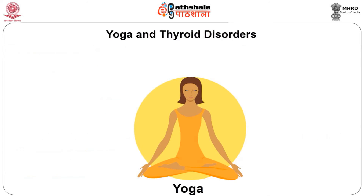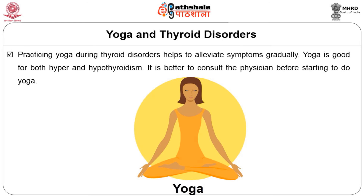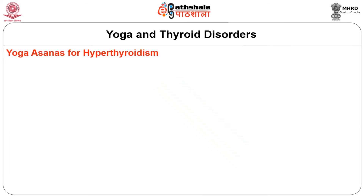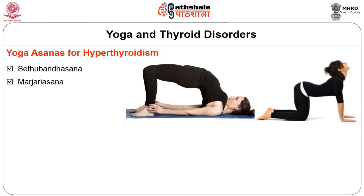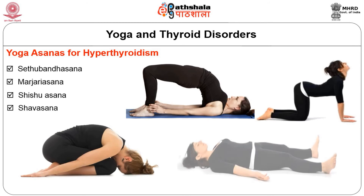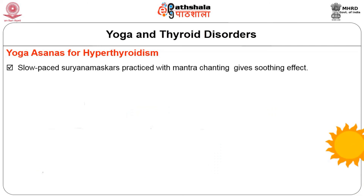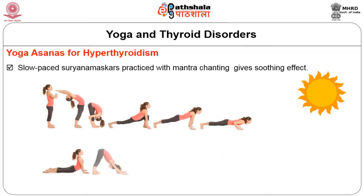Let us see how some yoga asanas help to overcome thyroid-related problems. Practicing yoga during thyroid disorder helps to alleviate the symptoms gradually. Yoga is good for both hyper and hypothyroidism, but it is better to consult a physician before starting. Some asanas that help to improve hyperthyroidism are Setubandhasana (bridge pose), Marjrasana (cat stretch), Shishu asana (child pose), Shavasana (relaxed posture), and slow-paced Surya Namaskars practiced with mantra chanting, which gives a soothing effect.